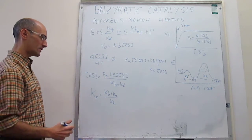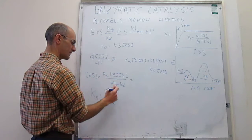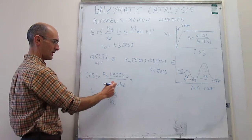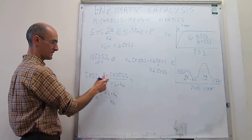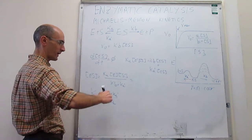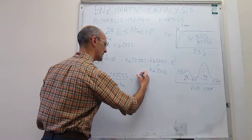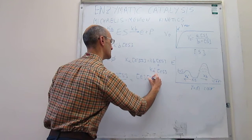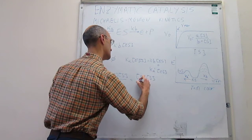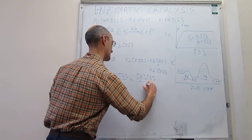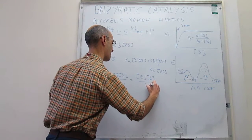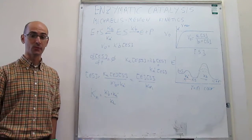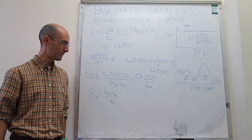Substituting K_M into the expression for [ES], we get [ES] = [E][S] / K_M. This simplifies the expression quite a bit. However, we still have a dependence on the concentration of free enzyme [E], which is not present in the overall rate law.